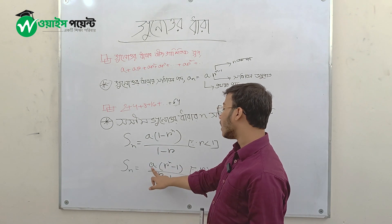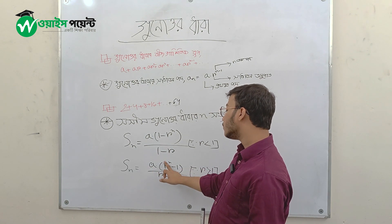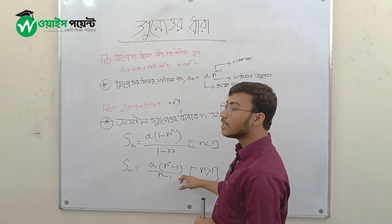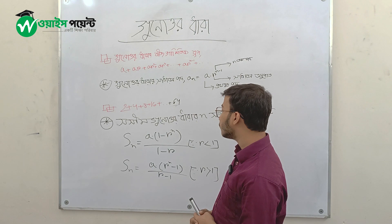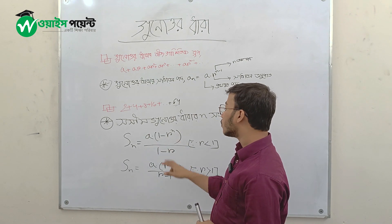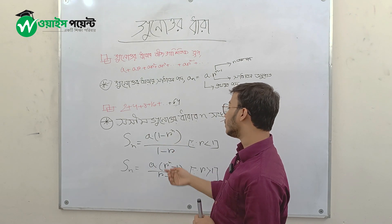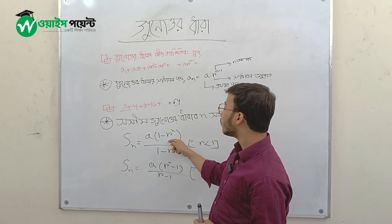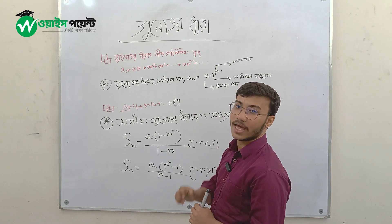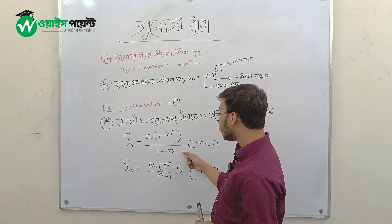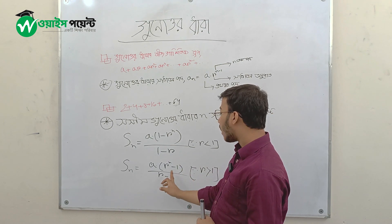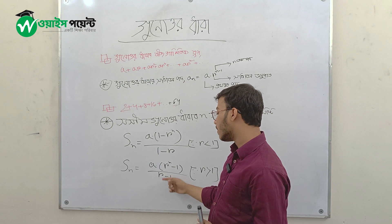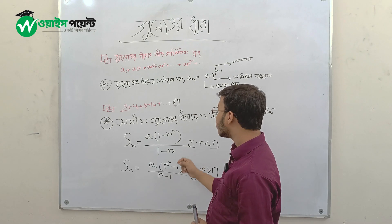So this is equal to a into... The formula gives the total sum. 1 minus r to the power n, divided by 1 minus r. The value of r to the power n of 0. That is minus 1. We have r minus 1.